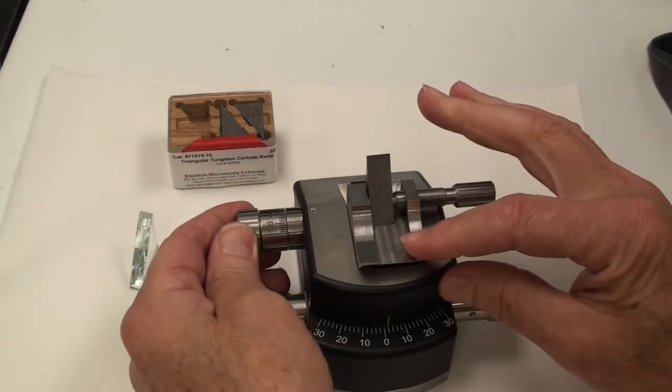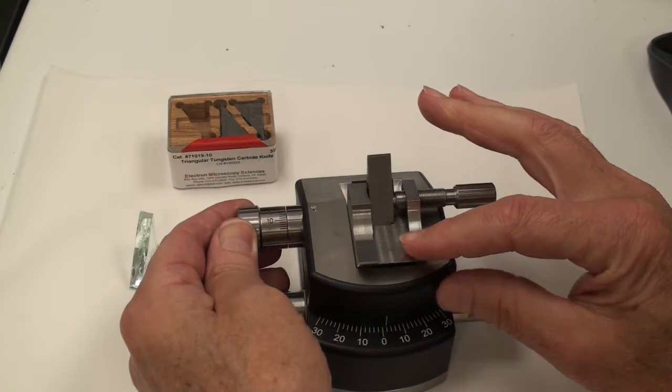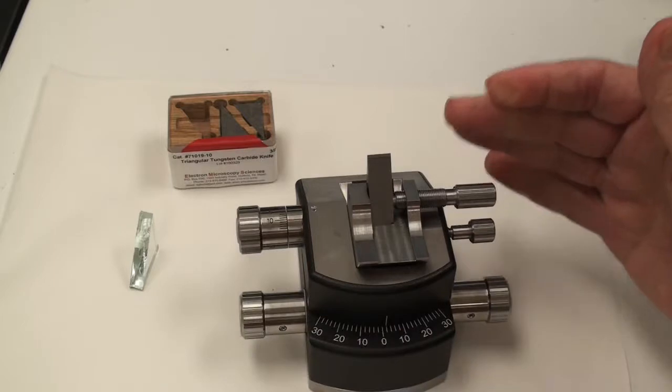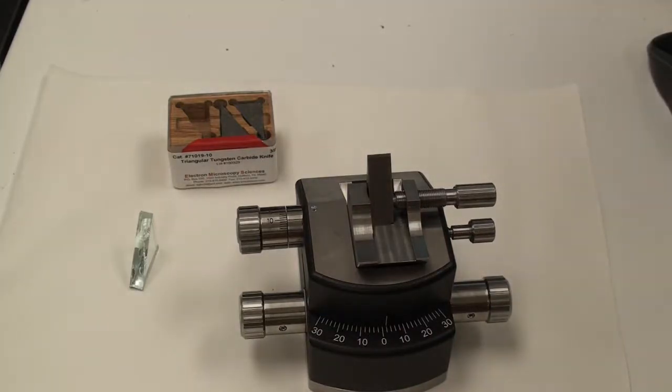Just remember to reset your clearance angle back when you put in a diamond knife for thin sectioning or a glass knife. So now that's ready, let's take a look at facing it off.